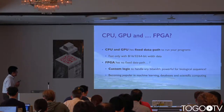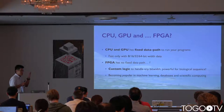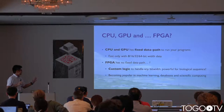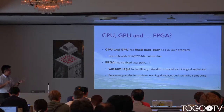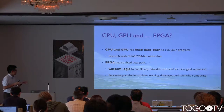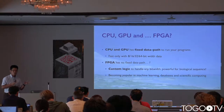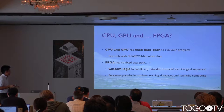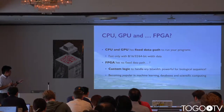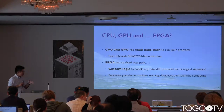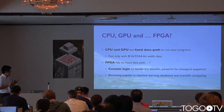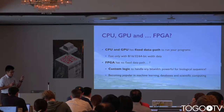Most of you may know about multi-core CPUs or GPUs. GPUs have many computing cores with fixed data paths, and we can improve our programs to use CPUs or GPUs to improve program throughput. My work is about FPGAs, which are now becoming popular in machine learning and scientific computing. But FPGAs have no fixed data paths like CPUs or GPUs.